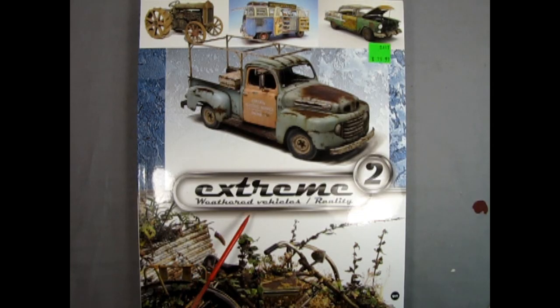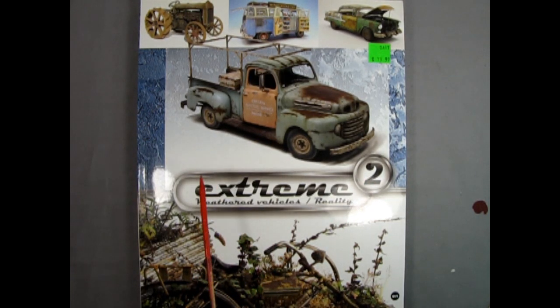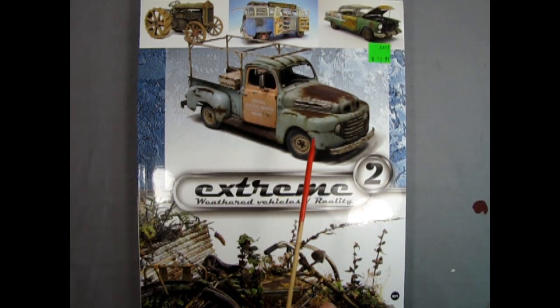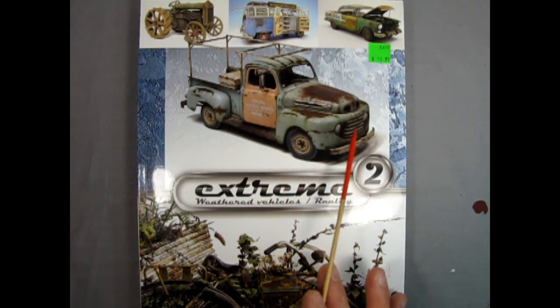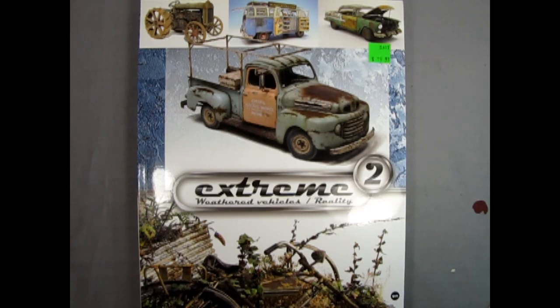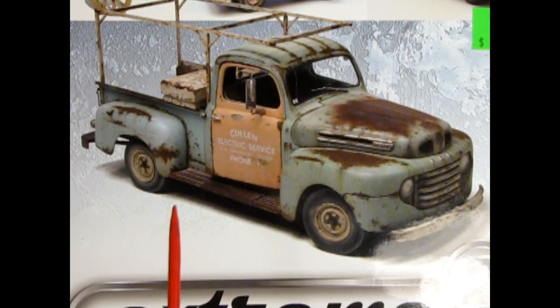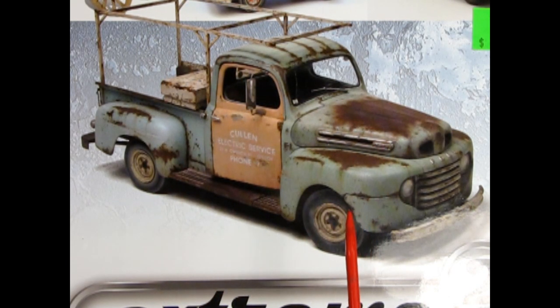I got this extreme weathered vehicles, over reality book number 2, from my old friend John Harry's. Unfortunately John passed away recently so I've been able to get some of his models and whatnot through his family and this was one of the cool books that I found in the collection. I am thinking of weathering that 53 Ford pickup truck, which was also a model from my friend John, in a style similar to this one on the cover.